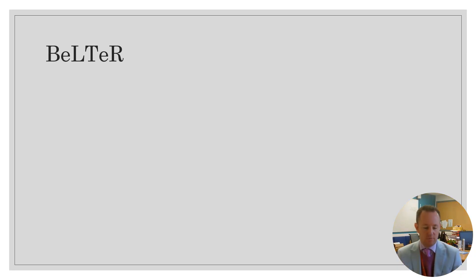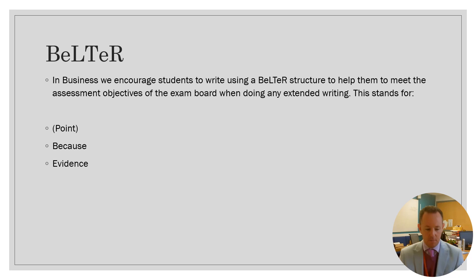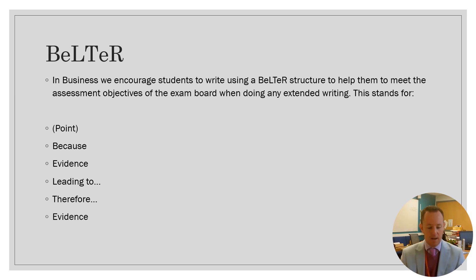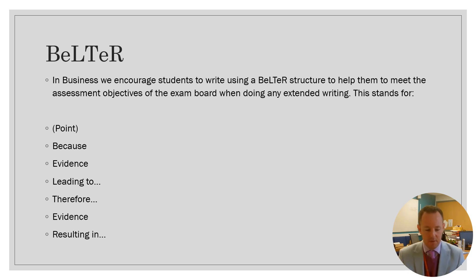The BELTER structure that we use for extended writing in Business Studies stands for: first, they make their Point; then they say Because — explaining the reason, similar to the two-mark questions; then they bring in Evidence, using the case study to pick out useful application to support the theory; then they say what this might Lead to for the business; then Therefore; and finally, it will Result in something. So they build their paragraph: make the point, say because of this reason, this might lead to this happening, and therefore this will be the consequence and final result for the business. This structure tries to tick off as many assessment objectives as possible.